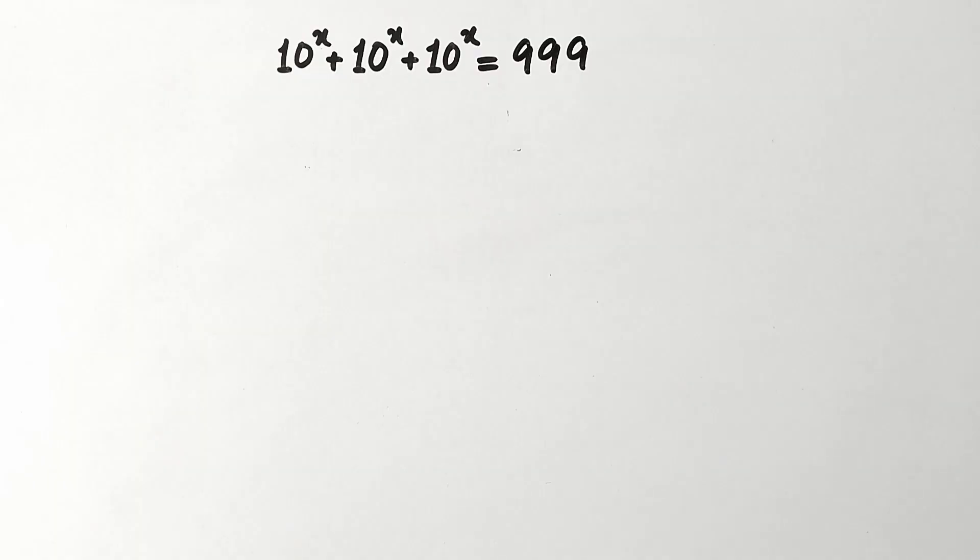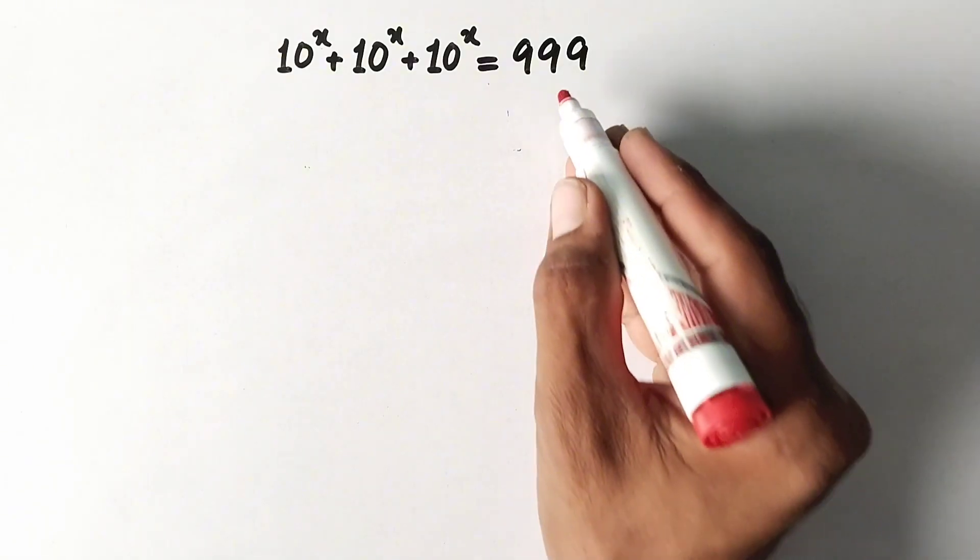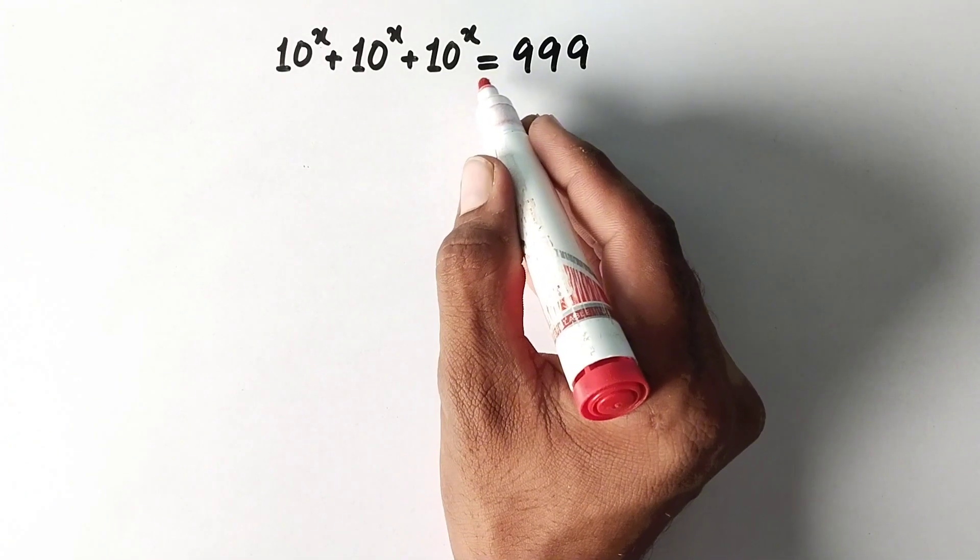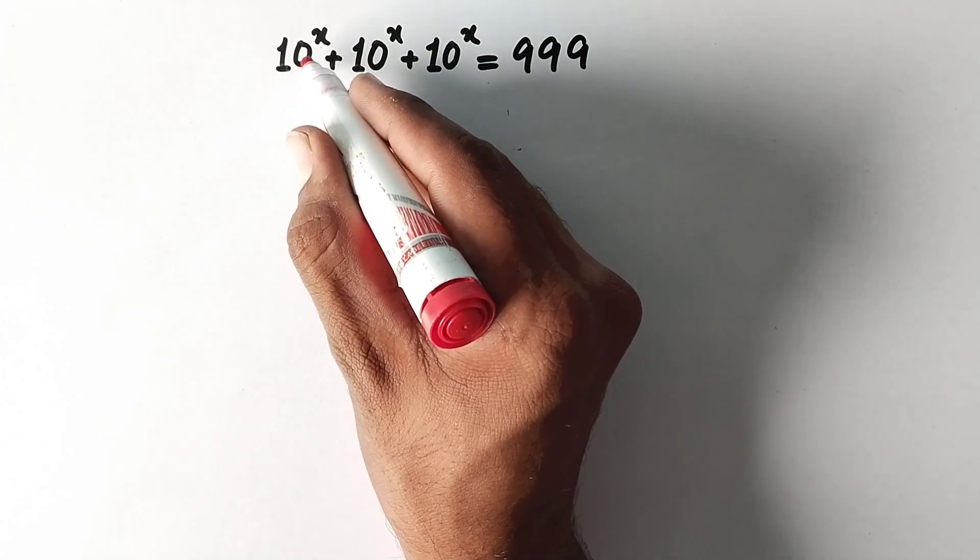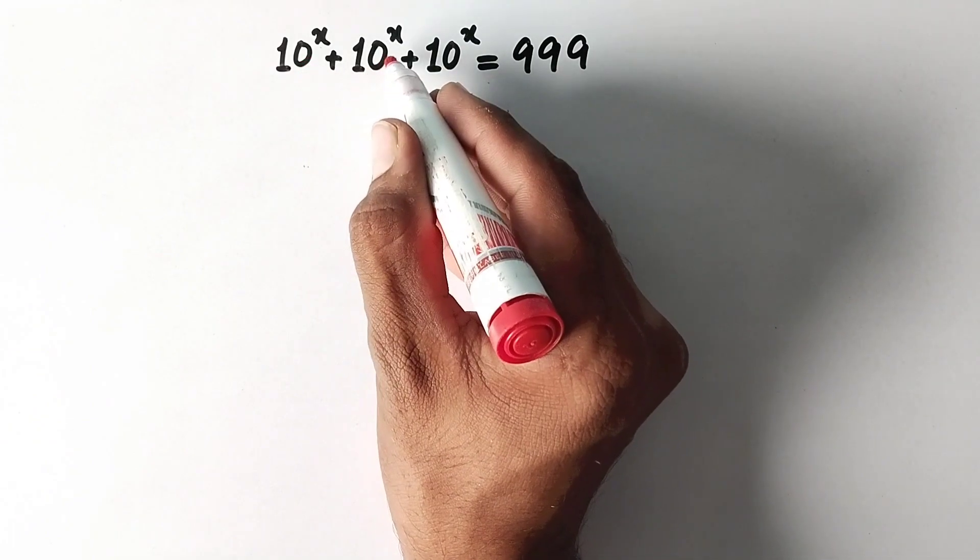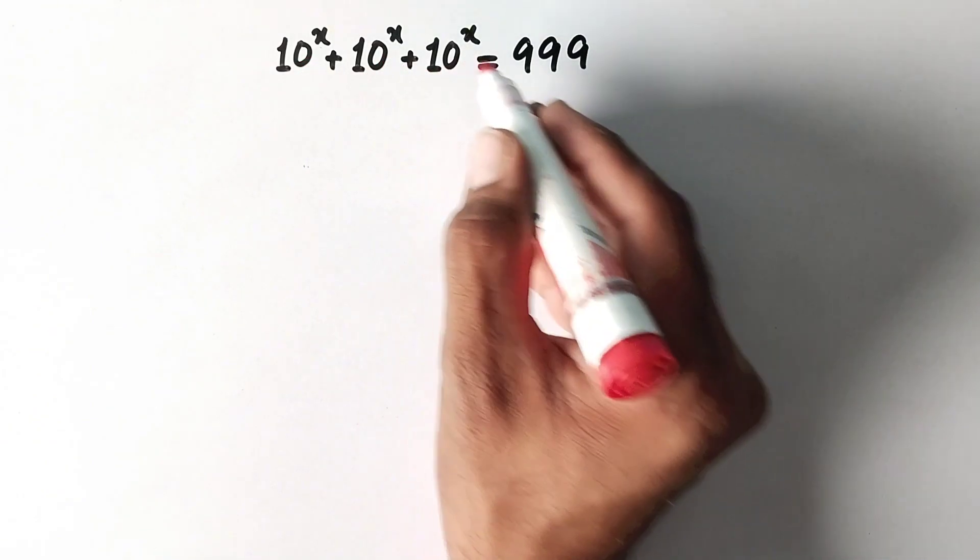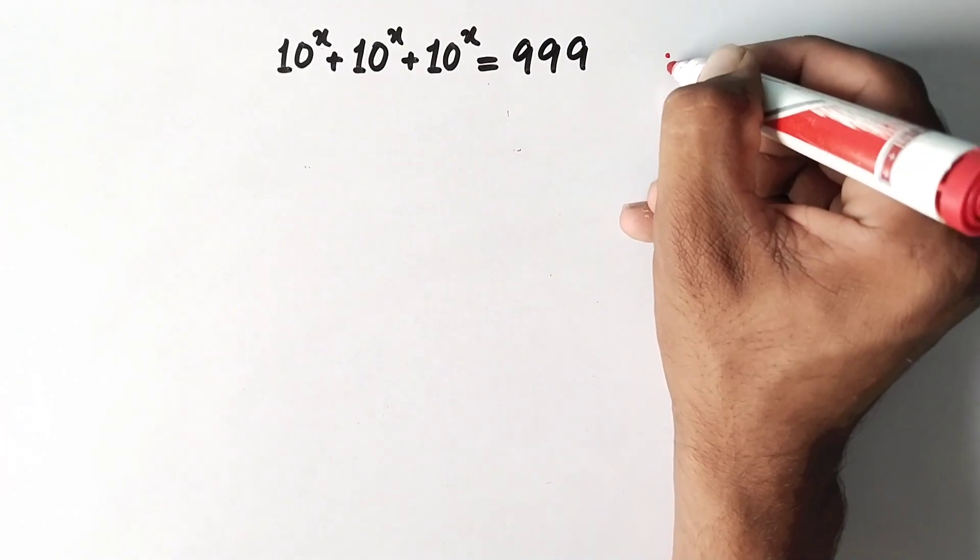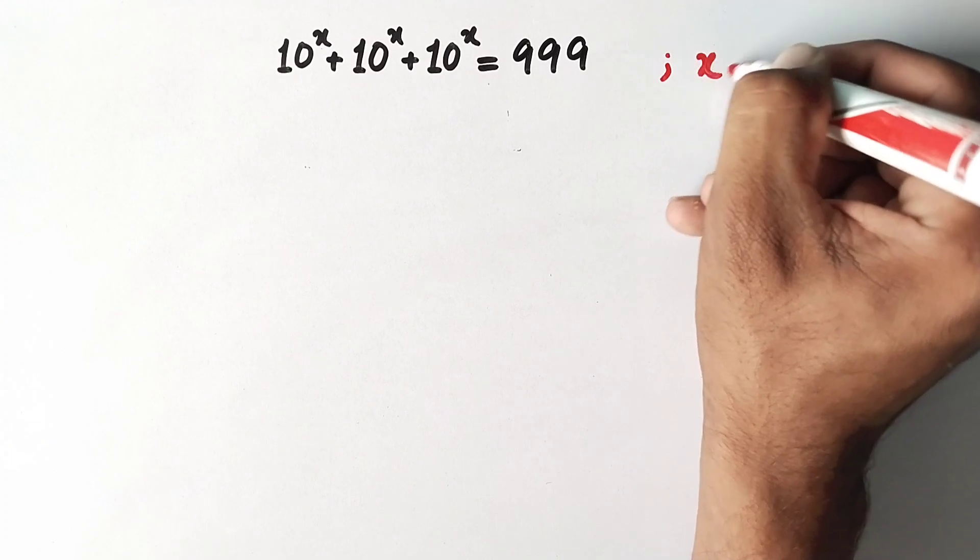Hello everyone and welcome to Explored Maths. Today we are going to solve this nice math problem: 10 raised to power x plus 10 raised to power x plus 10 raised to power x equals 999. And we have to find the value of x.